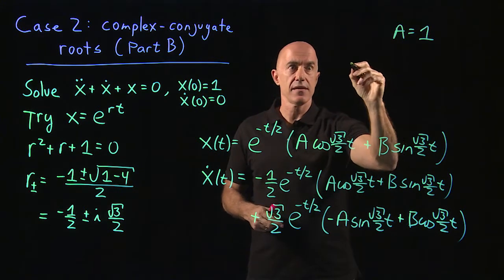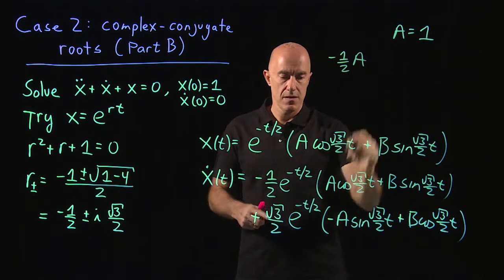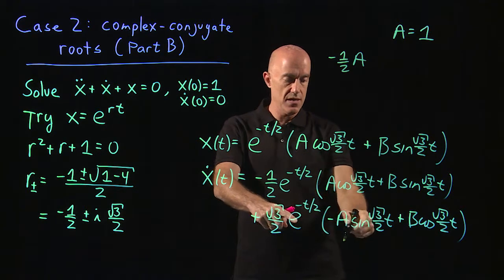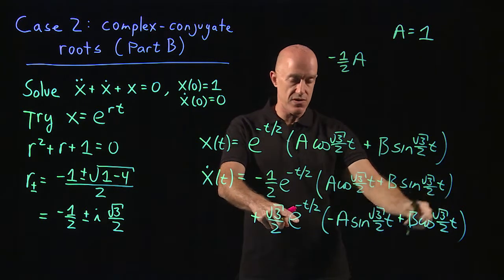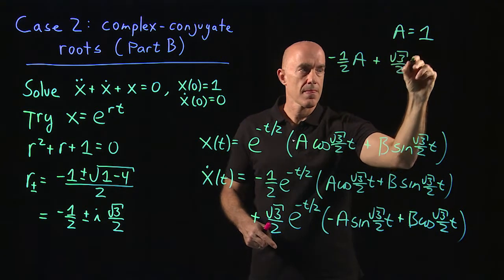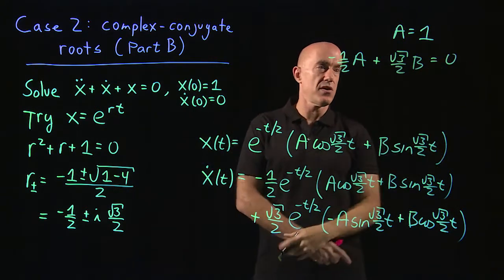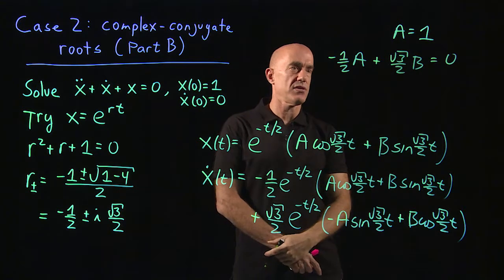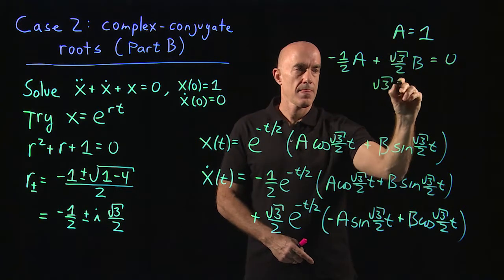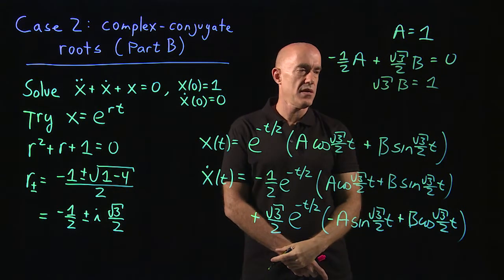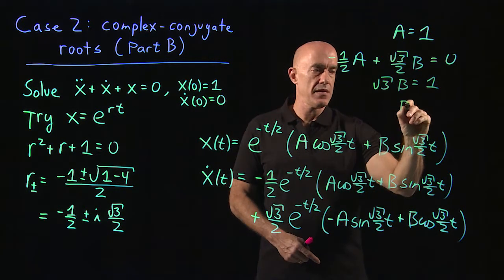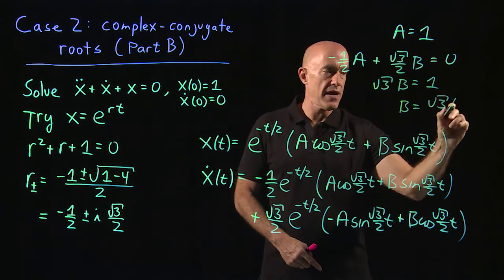For x dot of zero, the sine terms vanish and we get minus one half times a, plus root 3 over 2 times b — since e to the zero is one, sine of zero is zero, and cosine of zero is one. That is supposed to equal zero. So root 3b equals a, and since a equals one, we have root 3b equals one, giving b equals root 3 divided by 3.